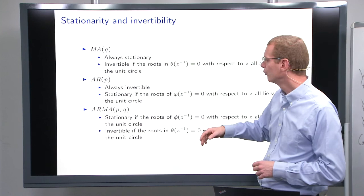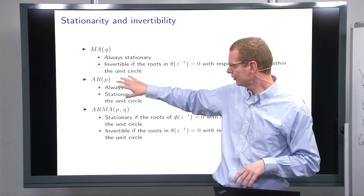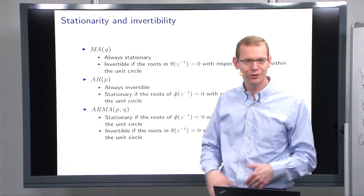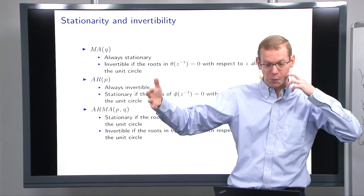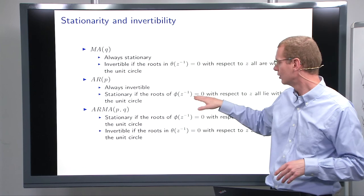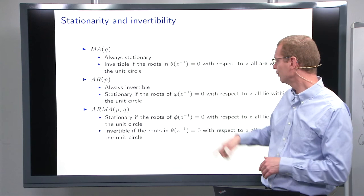For the autoregressive part, since that is on the other side of the equal sign, it's just the reverse. It's always invertible because it's written as a finite sum of the previous observations, whereas it's only stationary if the roots of phi evaluated set inverse equals zero. So, if you look at that polynomial, if the roots there are inside the unit circle.